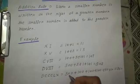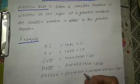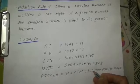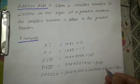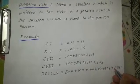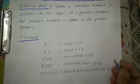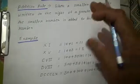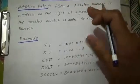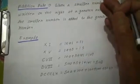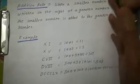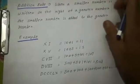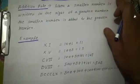DCCCLX: 500 plus 100 plus 100 plus 100 plus 50 plus 10 equals 860. So when you are writing a smaller symbol to the right of the greater symbol, you are adding the values.